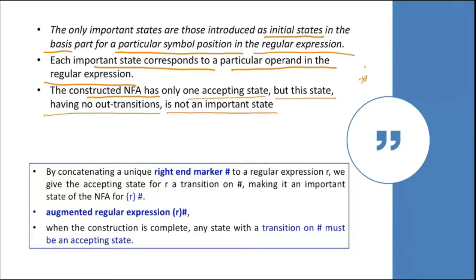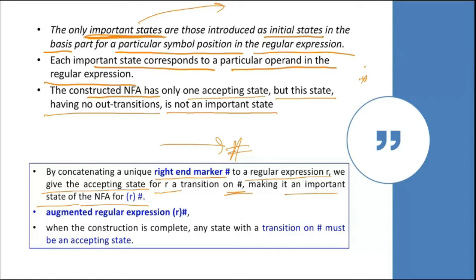By concatenating a unique right-hand marker (the hash symbol #) to a regular expression R, we give the accepting state of R a transition on hash. This makes it an important state for NFA R#, because important states are those having some outgoing transition for some symbol A belonging to the input alphabet sigma.